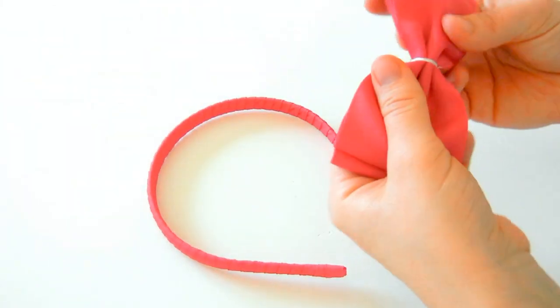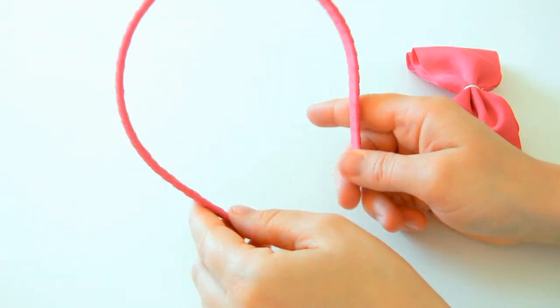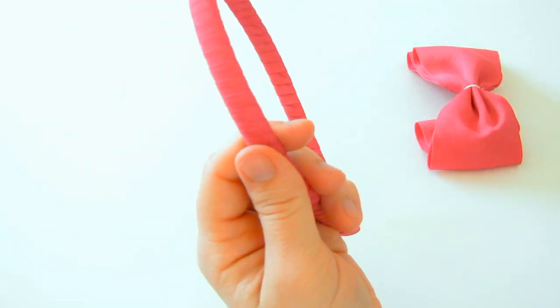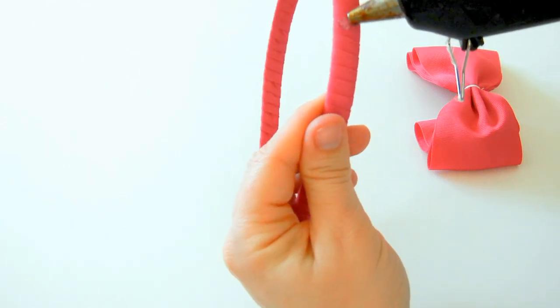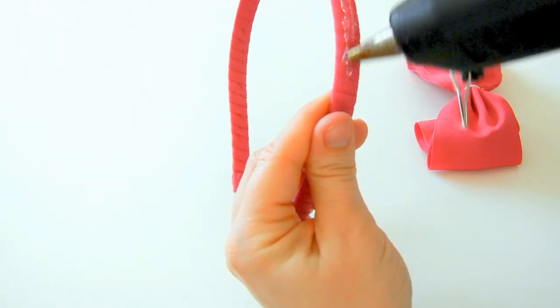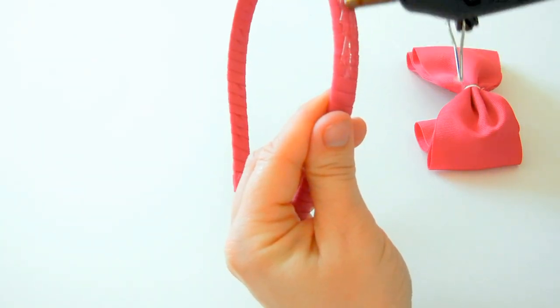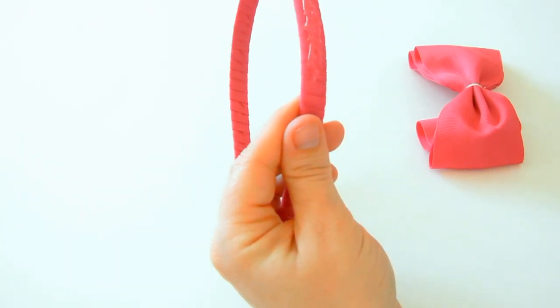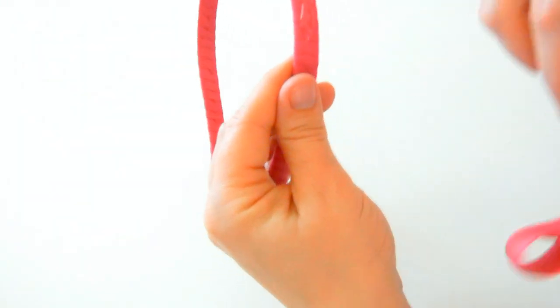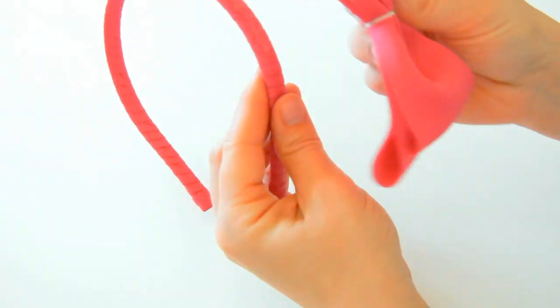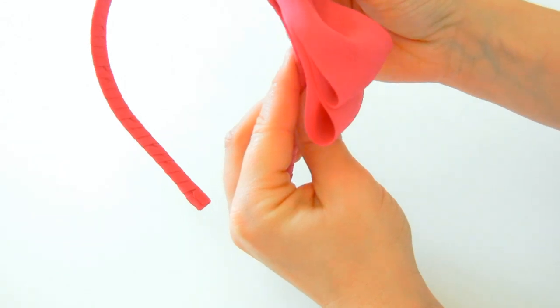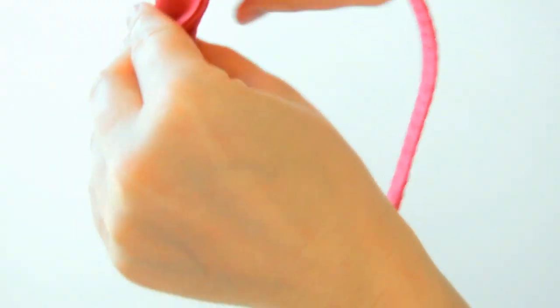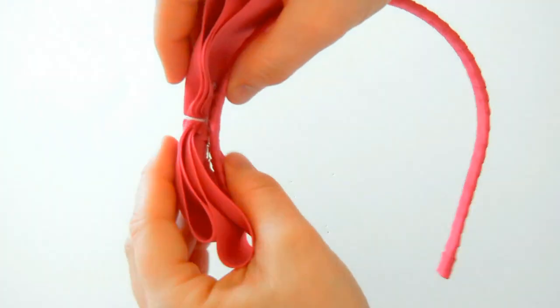Now we're just going to look at your headband and choose where you want the bow to go. Then just place glue along the edge. We don't want to do it in just one spot because we want the tails of the bow to stay down. Place that in the middle, in the center.